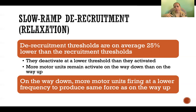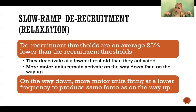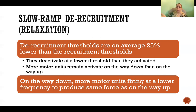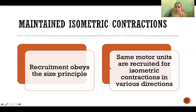On the way up we are recruiting more and more motor units and rate coding is increasing. Then on the way down, we keep the same number of motor units recruited up to a certain point — they stay on about 25% longer — but the rate coding decreases. There is more space between activations so that we're producing the same amount of force, but with a greater number of motor units on the way back down.